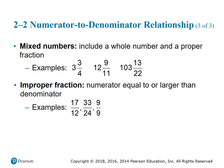Mixed numbers are fractions that include both a whole number and a proper fraction. For example, three and three quarters, 12 and 9/11, or 103 and 13/22.